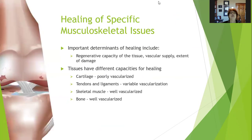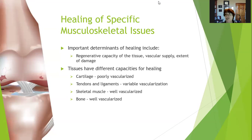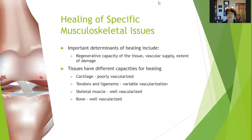Different musculoskeletal tissues have different healing capacities. The important determinants of healing include the regenerative capacity of the tissue — some tissues regenerate better than others — the vascular supply, and the extent of damage. Circulation equals healing: the more circulation you get, the better. But some tissues have poor vascularization and don't get a lot of circulation. Cartilage is poorly vascularized and heals the slowest. Tendons and ligaments are variable in their vascularization, so they heal more slowly than skeletal muscle and bone, which are both well vascularized.